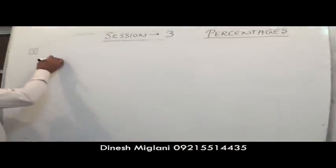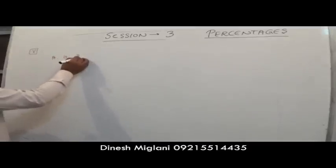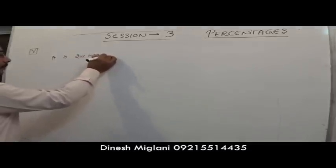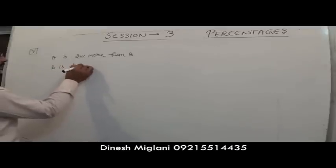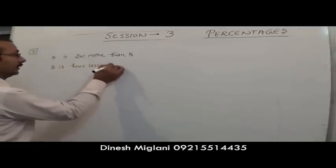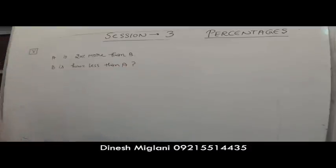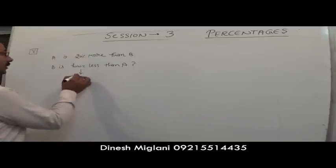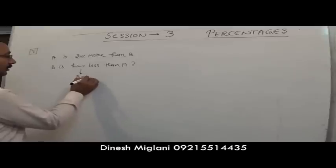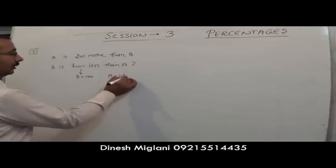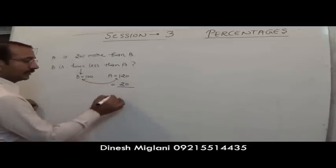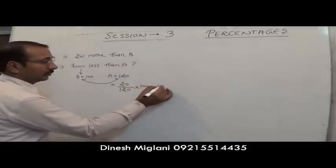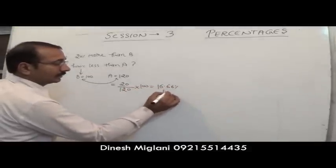For example: A is 20% more than B. You have to find by what percent B is less than A. Suppose B = 100, then A = 120. B is less than A by 20, and comparing with A: 20/120 × 100 = 16.66% less. That is the answer.